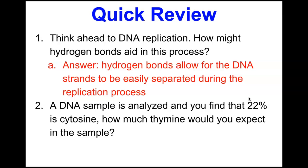A DNA sample is analyzed and you find that 22% is cytosine — how much thymine would you expect? Following Chargaff's rules: if there's 22% cytosine, there would be 22% guanine. Adding those together gives 44%. Subtracting 44% from 100% leaves 56%, which must be adenine and thymine combined. Dividing 56% by two gives 28% thymine and 28% adenine.